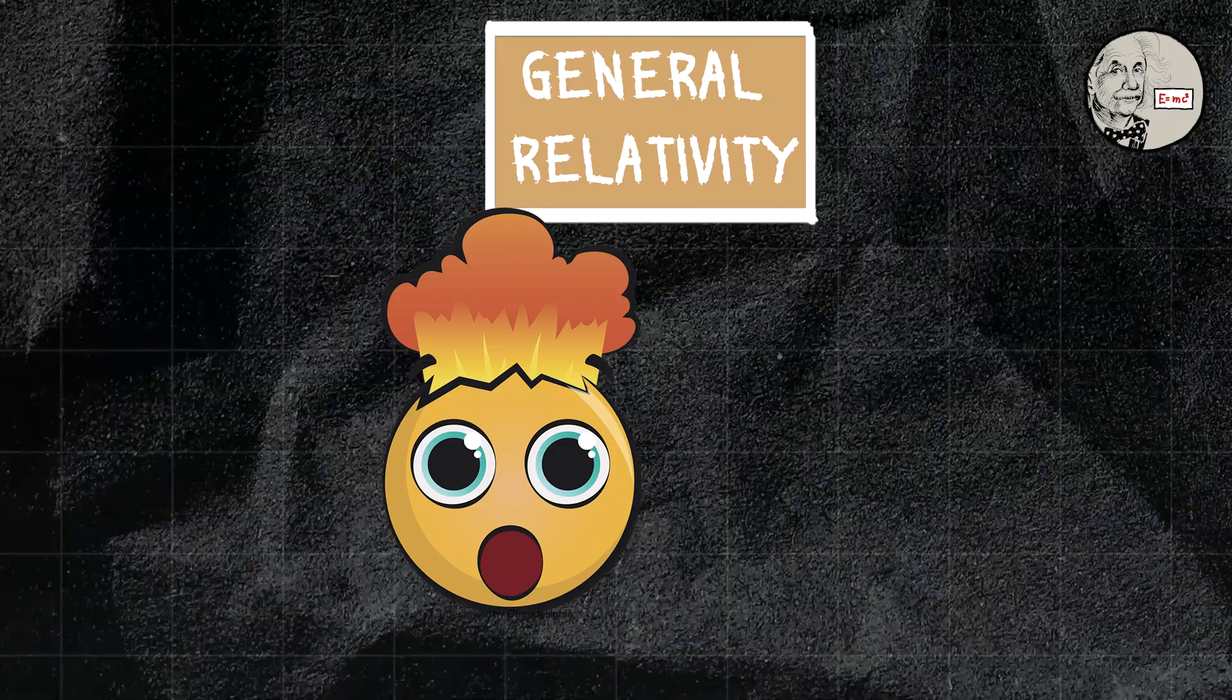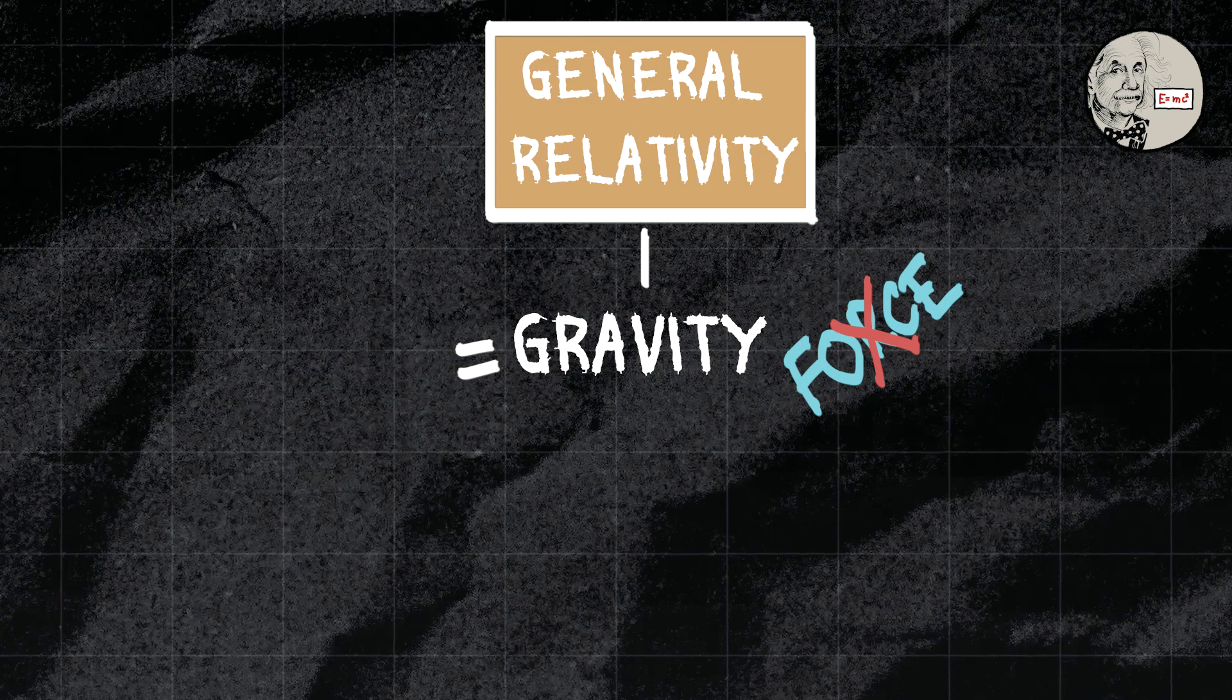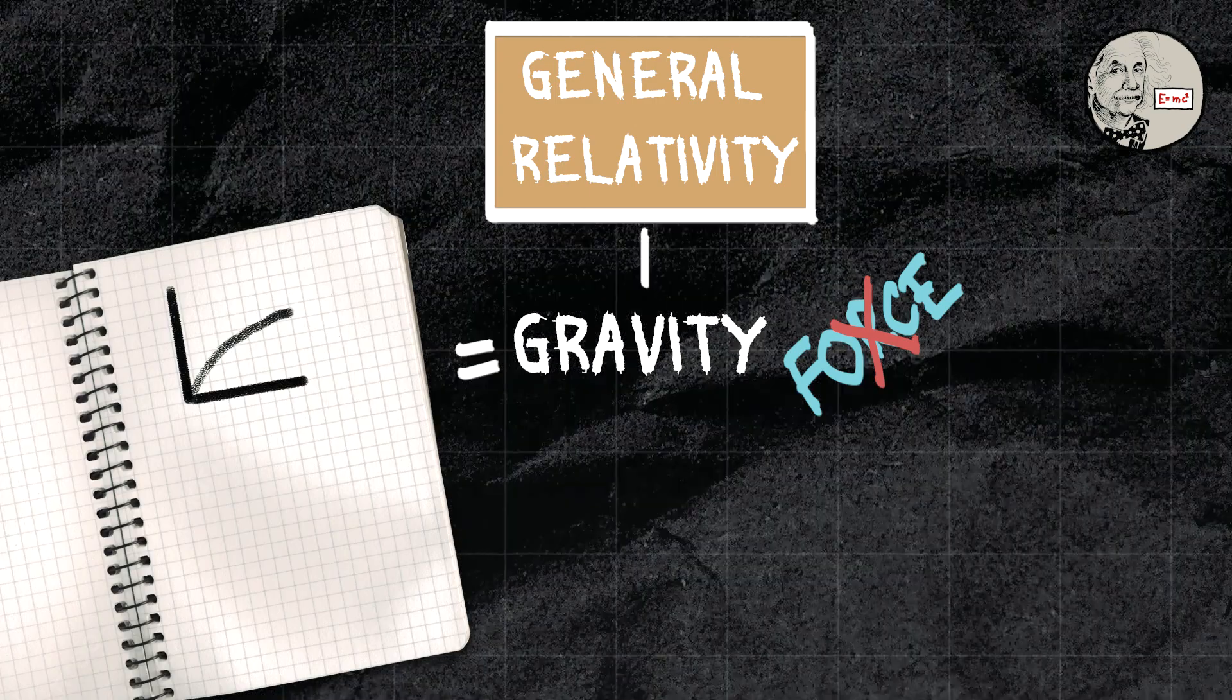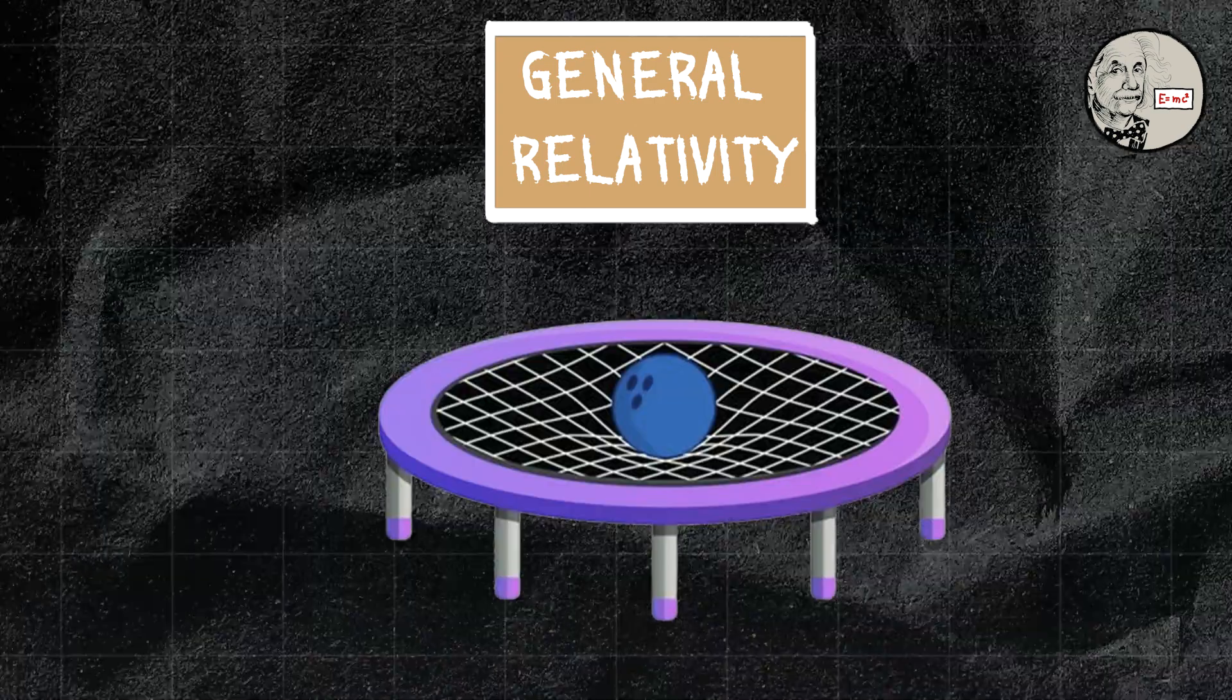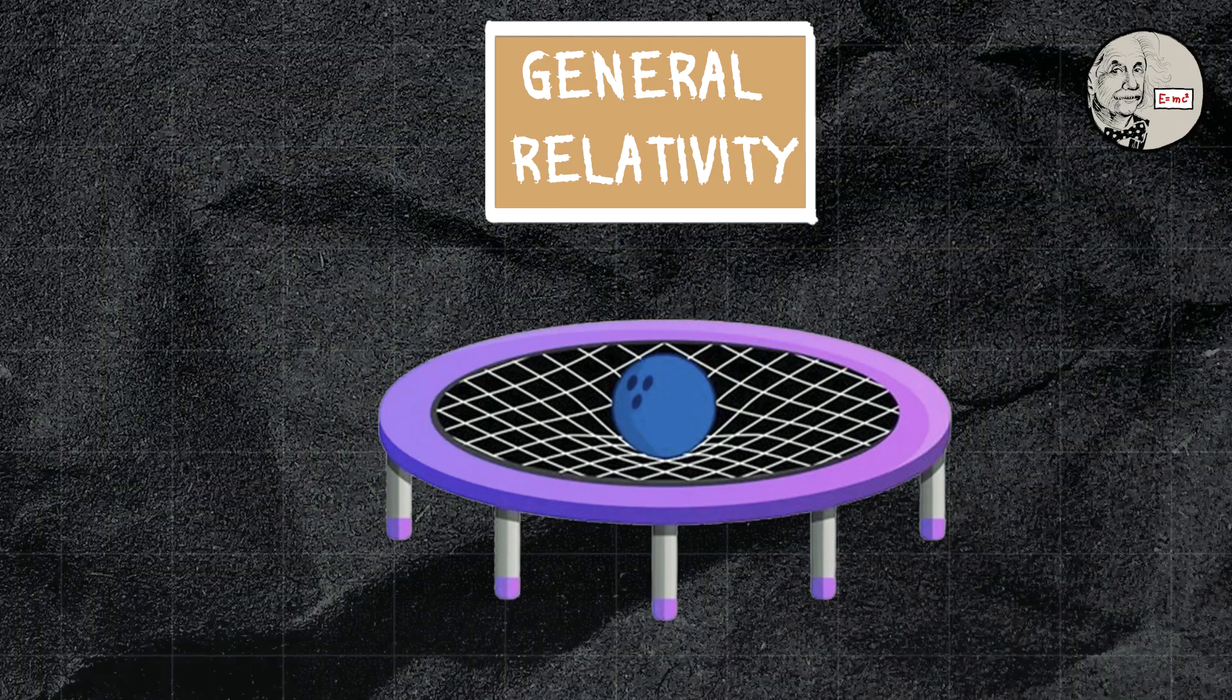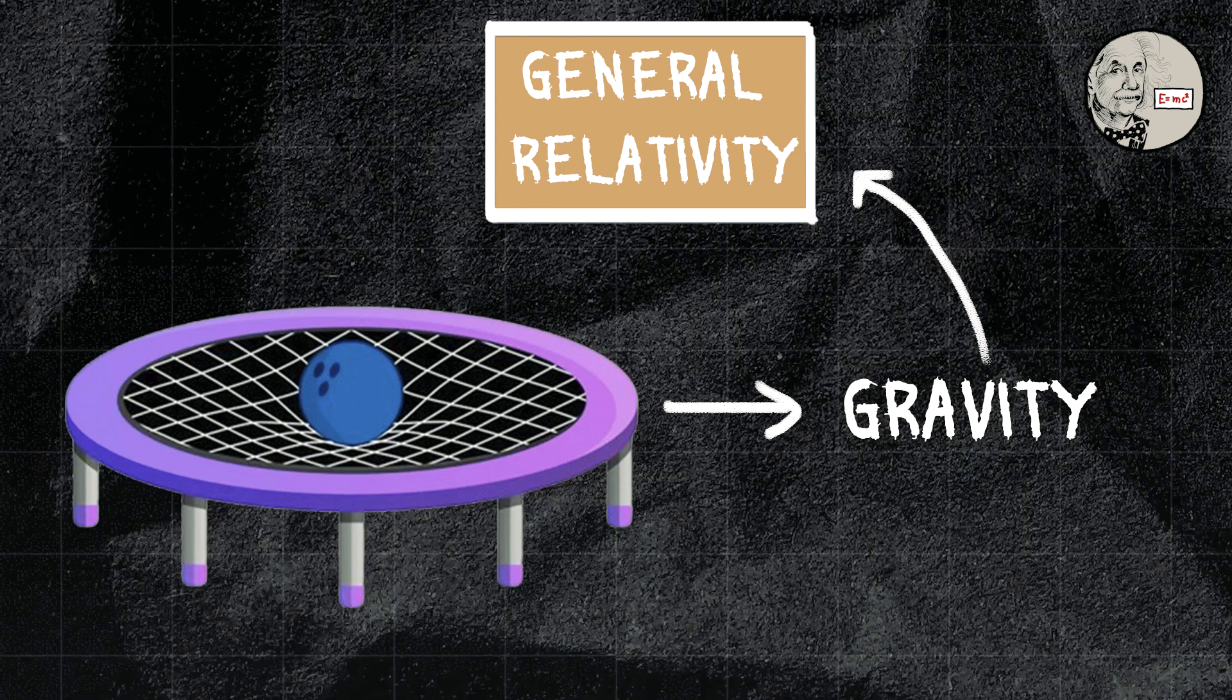Then there's general relativity, which blows our minds even further. It explains gravity not as a force, but rather as a consequence of the curvature of space-time caused by the presence of mass or energy. Imagine a bowling ball placed on a trampoline. It creates a dip in the fabric, and that's how gravity works according to general relativity.